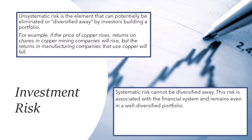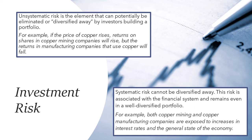Systematic risk, the other type of risk, cannot be diversified away. This risk is associated with the financial system and remains even in a well-diversified portfolio. For example, both copper mining and copper manufacturing companies are exposed to increases in interest rates and the general state of the economy.